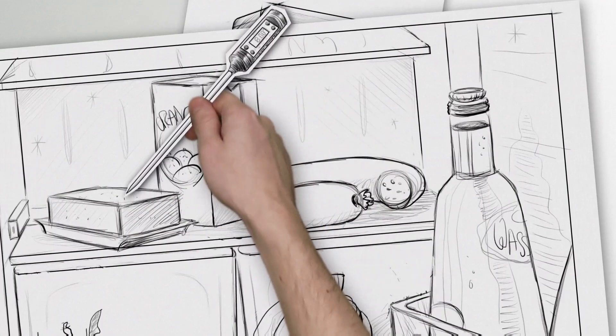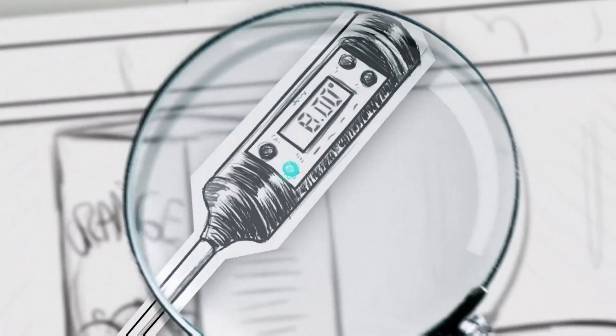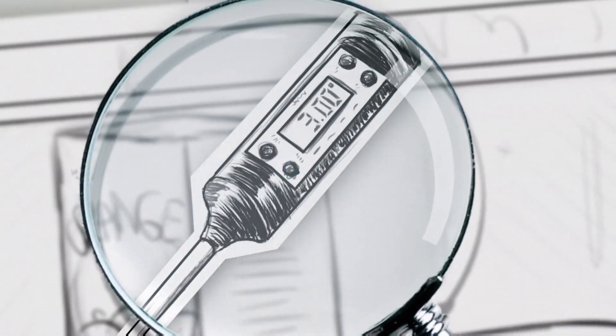A fridge extracts heat from foods and transports the heat to the heat exchanger at the back of the fridge.